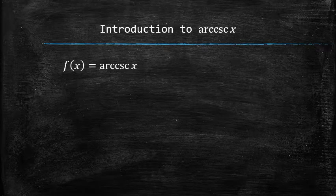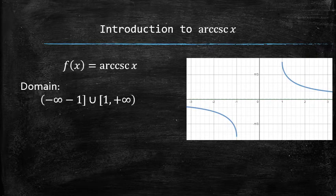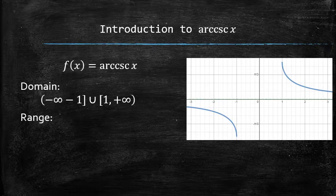Let's take a look at this new function and its graph. The domain of this function is all real numbers except the values between negative 1 and 1. The range of this function is the values between negative pi over 2 and pi over 2 except 0.